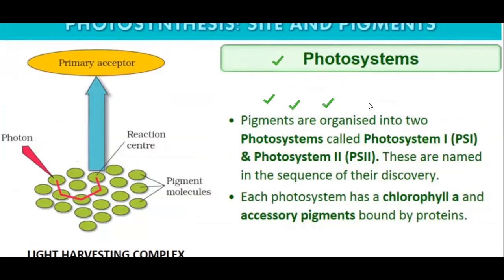Pigments are organized into two photosystems: photosystem one and photosystem two. These are named in the sequence of their discovery — photosystem one was discovered first and photosystem two was discovered later. Each photosystem has a chlorophyll a and accessory pigments bound by proteins. Whether it is photosystem one or photosystem two, each has chlorophyll a present, along with accessory pigments specific to that plant.